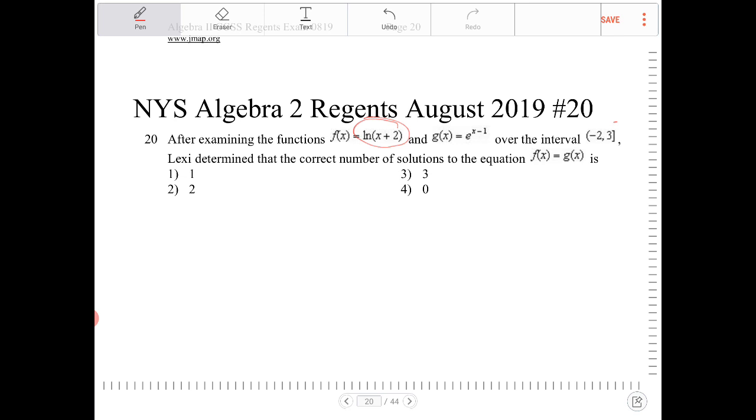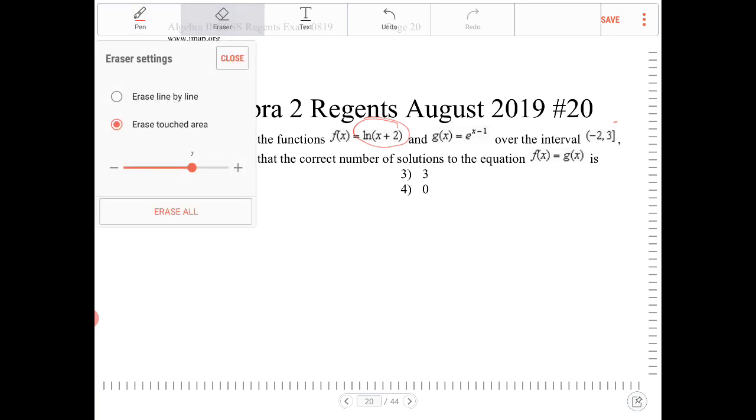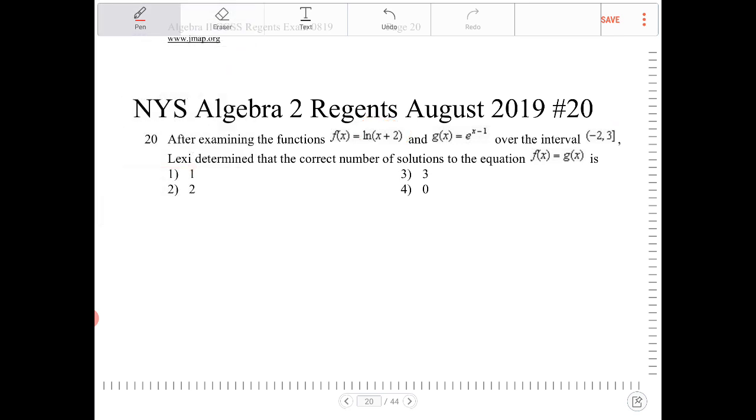Actually, we cannot reach negative 2. If x were to equal negative 2, then we would be taking the natural log of 0 and that would be undefined. So that's the reason for why we are excluding negative 2. To solve this problem...